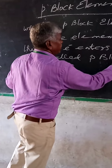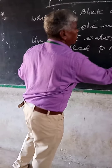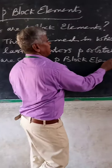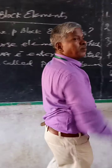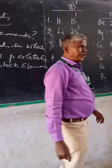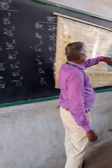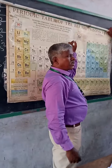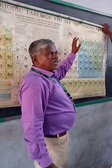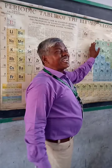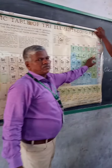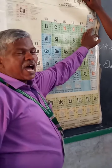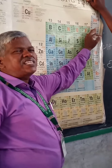Now, there are P block elements in the periodic table. Take a look at the right side of the periodic table.